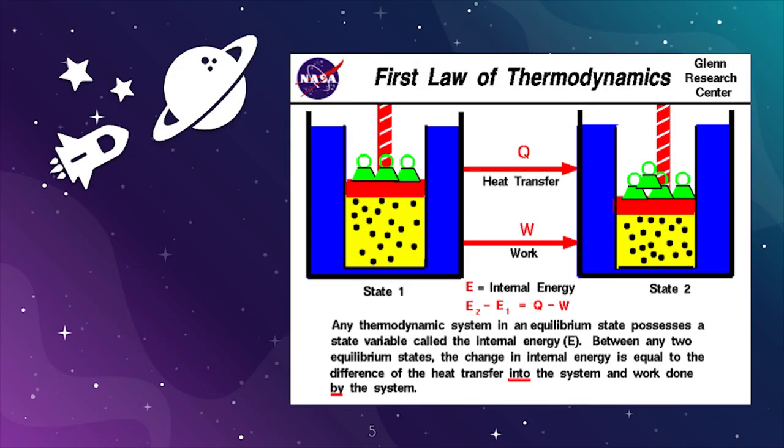The first law of thermodynamics states that heat is a form of energy, and thermodynamic processes are therefore subject to the principle of conservation of energy. This means that heat energy cannot be created or destroyed. The law of conservation of energy states that the total energy of an isolated system is constant. Energy can be transformed from one form to another, but can neither be created or destroyed.